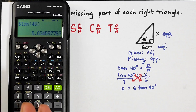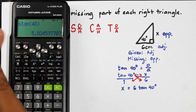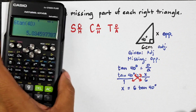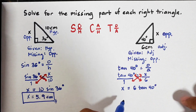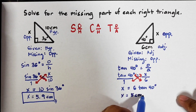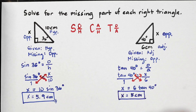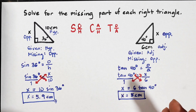Since we express the final answer to one decimal place and the digit after the decimal is zero, rounding gives a whole number. Therefore x = 5 centimeters. That is the answer for this problem. I hope you learned something from this video on how to find the missing side of a right triangle using SOH-CAH-TOA.